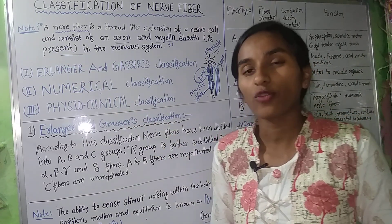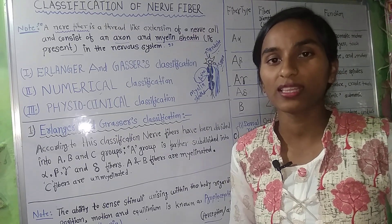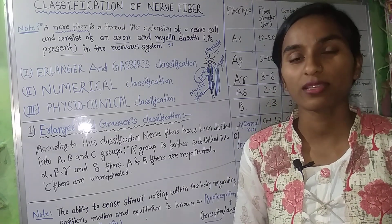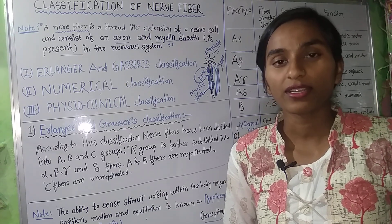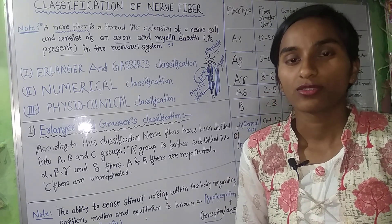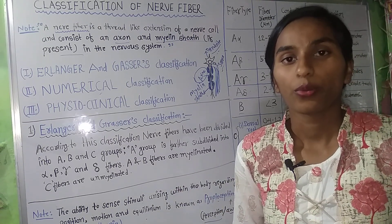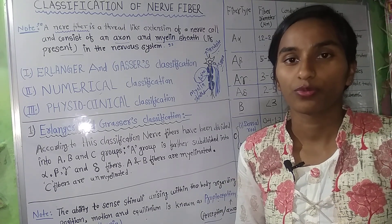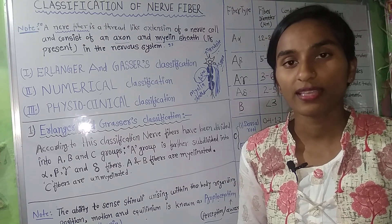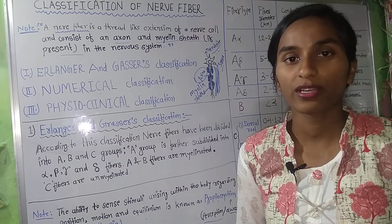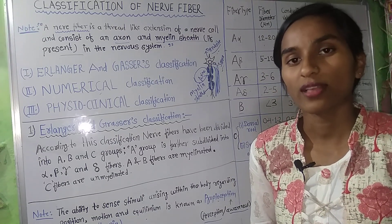In myelinated nerve fibers, the myelin sheath is present. In the central nervous system, the myelin sheath is formed by oligodendrocytes, and in the peripheral nervous system, the myelin sheath is formed by Schwann cells.